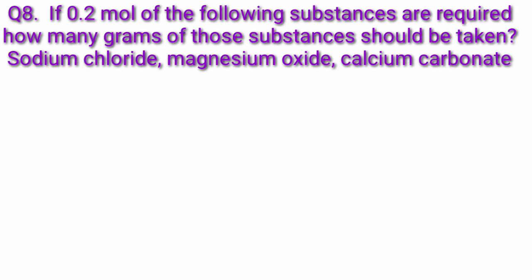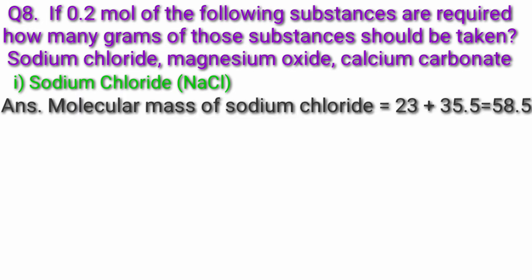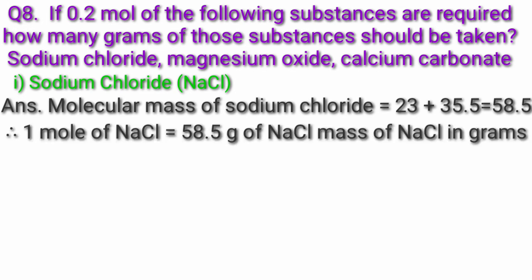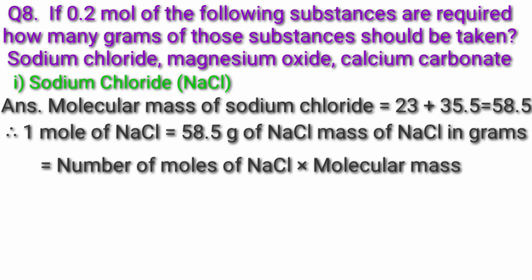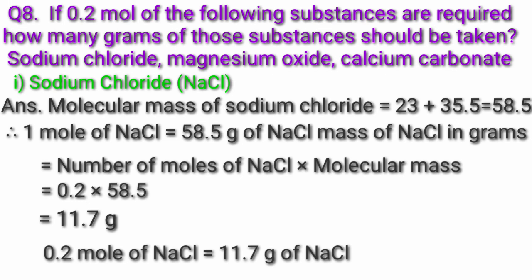Question 8. If 0.2 mol of the following substances are required, how many grams of those substances should be taken? First, sodium chloride, NaCl. Molecular mass of NaCl = 23 + 35.5 = 58.5. Therefore 1 mol of NaCl = 58.5g. Mass of NaCl = number of moles × molecular mass = 0.2 × 58.5 = 11.7g. So 0.2 mol of NaCl = 11.7g of NaCl.